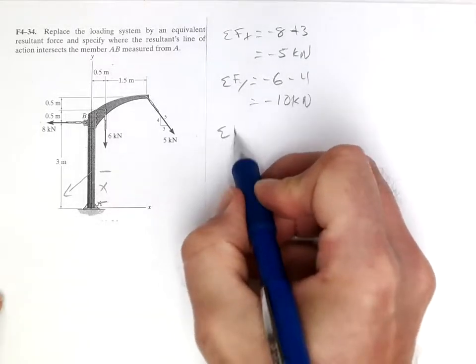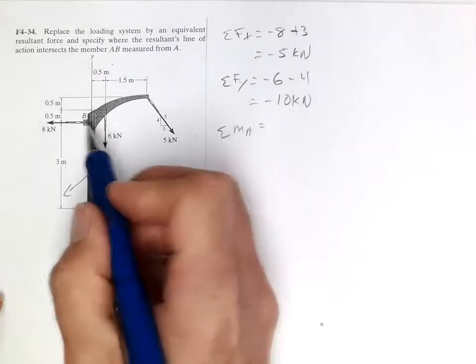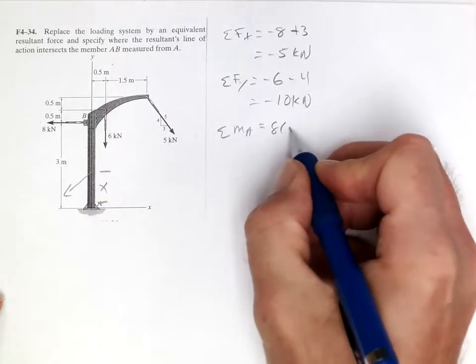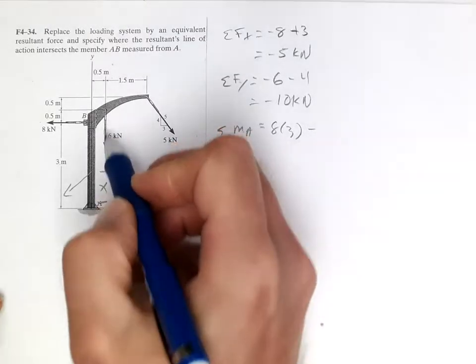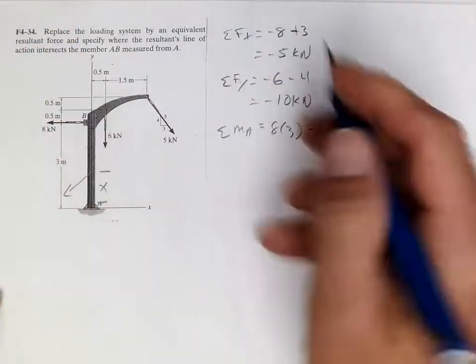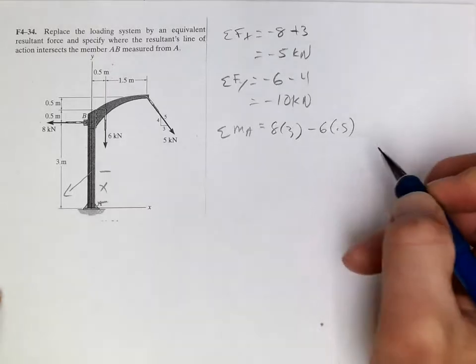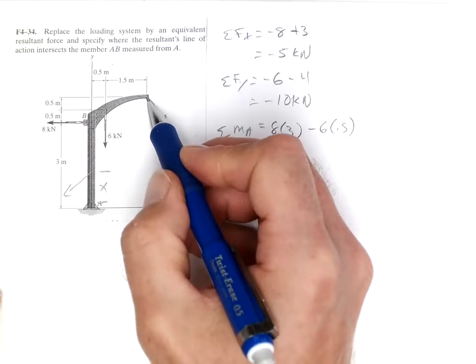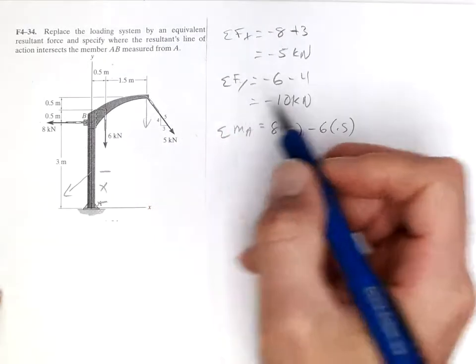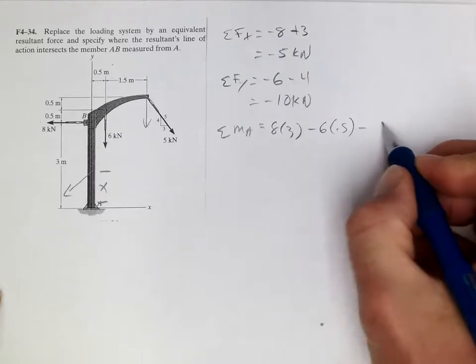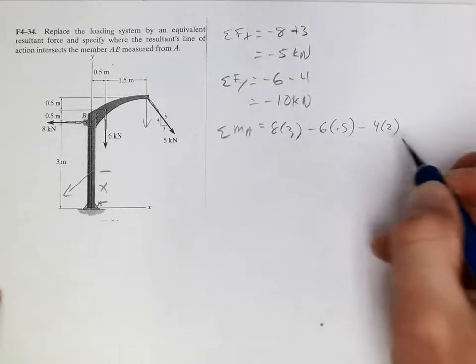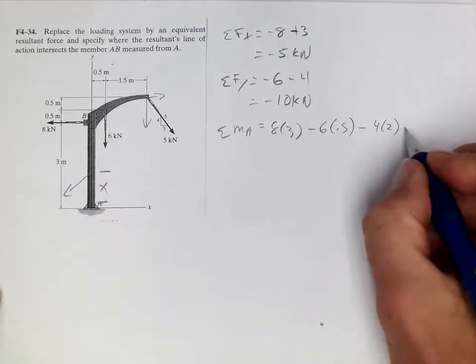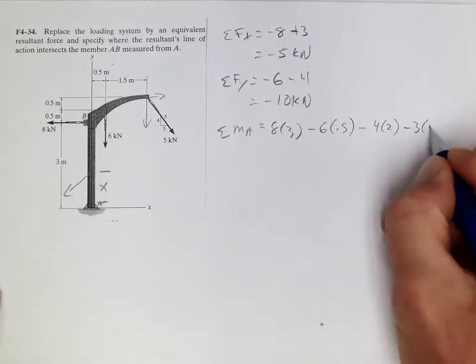So let's sum the moments about A. The 8 times 3 causes rotation that way, so 8 times 3 minus 0.6 times 0.5 causes negative rotation. Then we'll do each component. So the vertical 4 times this distance, 4 and 2, and then the horizontal at this distance, also causing negative, so 3 times 4.